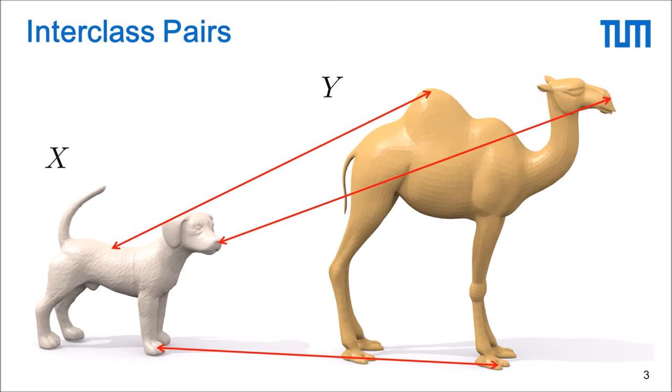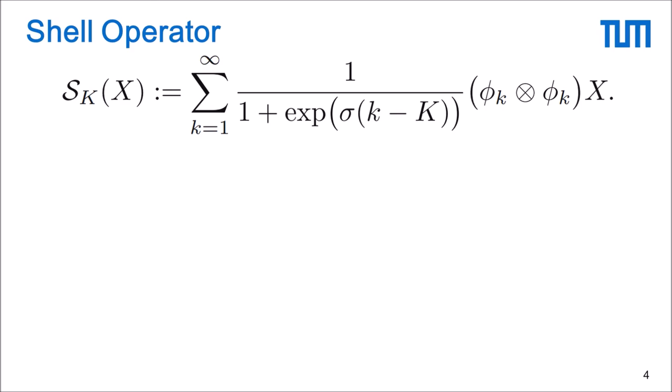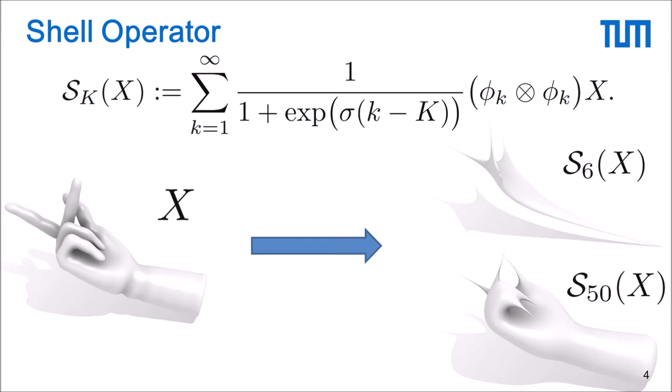To that end we introduce the so-called shell operator which allows us to remove the fine scale geometry of a given input shape and reduce it to these stick figure-ish approximations which we call smooth shells. The hyperparameter k controls the level of detail. The bigger k the more details we get and for k going to infinity it converges to the input x.